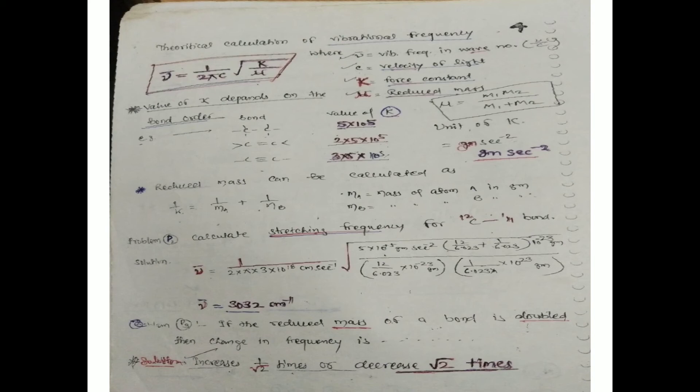The unit of k is grams per second squared. The reduced mass can be calculated by the formula. We can solve the problem to calculate the stretching frequency for the carbon-12 to hydrogen bond; the value of nu-bar is 3032 cm⁻¹. If the reduced mass of the bond is doubled, the frequency decreases by a factor of root 2.